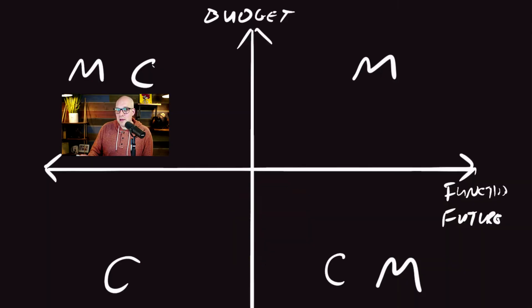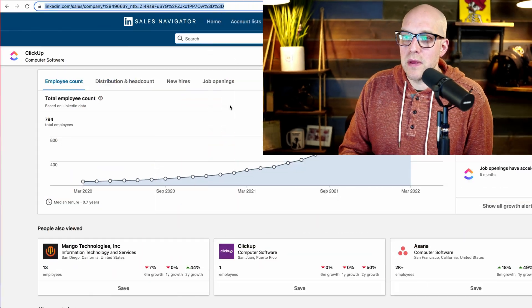In the upper left-hand corner of the quadrant — where you have budget but don't need a lot of functionality today — I would recommend Monday.com, because it's the tool that's going to be able to scale with your needs. Before getting into the upper right quadrant and talking about Monday as far as budget and features, I want to show you something interesting: a tool from LinkedIn Sales Navigator.